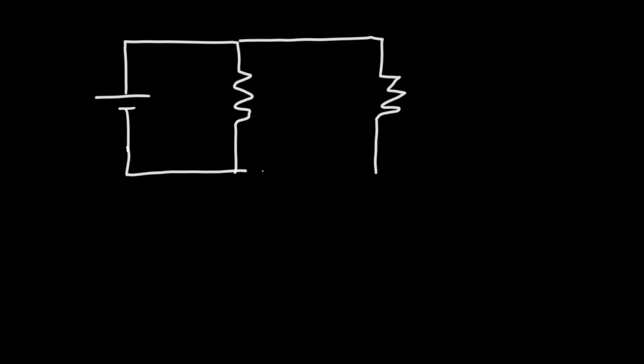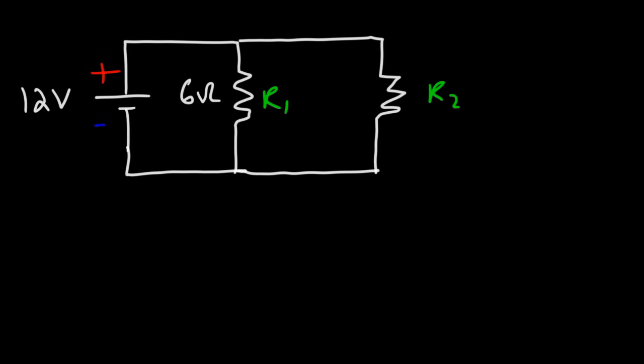Let's begin with a circuit. Let's say we have a battery connected across two resistors that are connected in parallel. Here we have the positive terminal of the battery and the negative terminal. We're going to use a 12-volt battery, and this is going to be a 6-ohm resistor — let's call it R1 — and R2 will be a 4-ohm resistor.